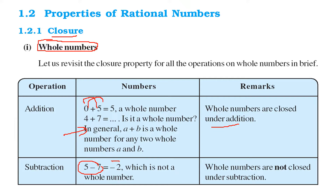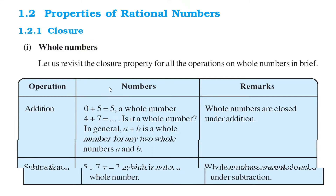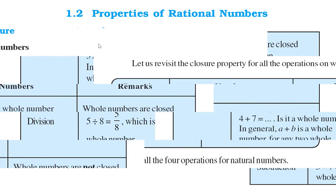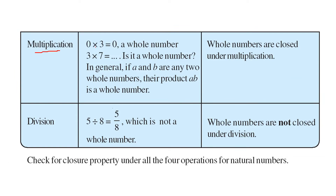For subtraction we get minus 2, which is actually not a whole number. If you multiply — say we multiply 0 with 3, 3 with 7 — any numbers which are whole numbers, so a into b will get a whole number. But if you divide, 5 divided by 8 is not a whole number. That is, you can say whole numbers are not closed under division.